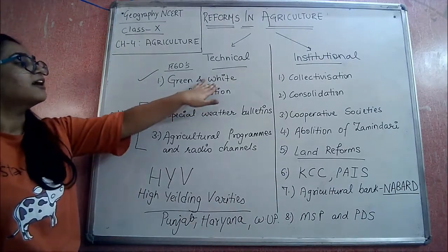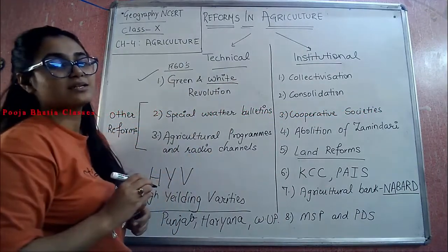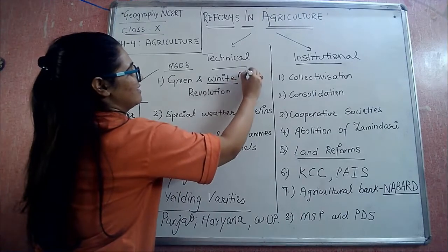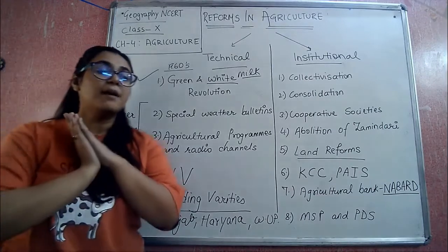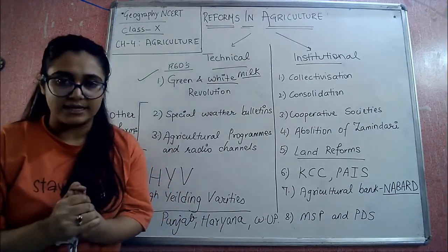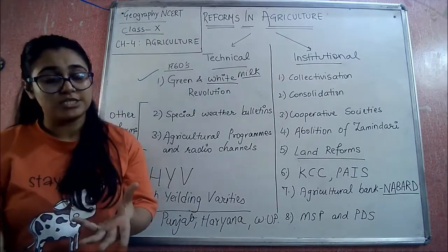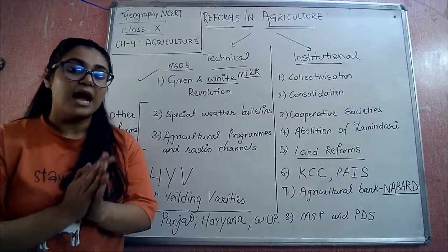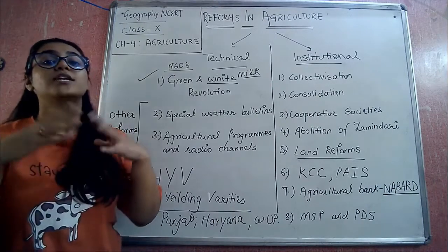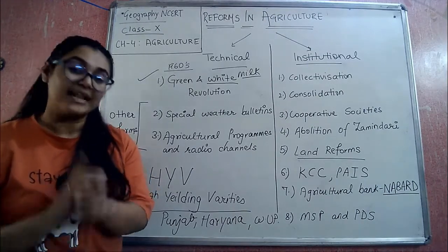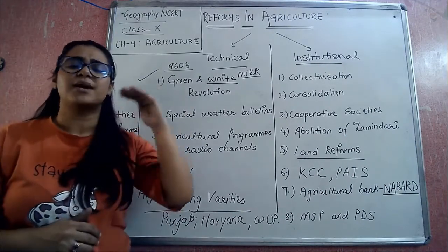After that, we talk about the White Revolution. From the name itself you may have understood - it is related to milk. Basically our government combined the technology and the method of extracting milk and then selling it to advance the milk revolution. You will be happy to know that Amul, which is very famous worldwide, is a milk cooperative society that belongs to India, and it reached such a big pedestal under this revolution.